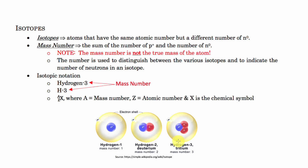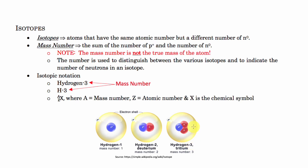There are three isotopes for hydrogen: hydrogen-1, hydrogen-2, and hydrogen-3. They use this little number to distinguish between the three isotopes — that's what's referred to as the mass number. The mass number is the sum of the number of protons and the neutrons in the nucleus. So: one proton gives hydrogen-1; a proton and a neutron gives hydrogen-2; and one proton and two neutrons gives hydrogen-3.